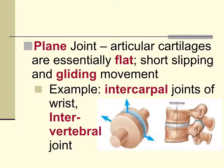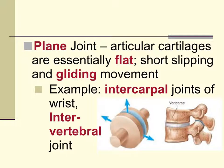The first synovial joint is called the plane joint. It is called a plane joint because the articular surface — the shape of the bones where they touch — is flat, and they have a slipping or gliding movement. This movement can happen in the same plane but in different directions. An example is found between the carpal bones and the intertarsal bones.